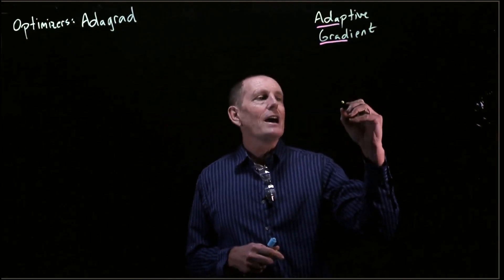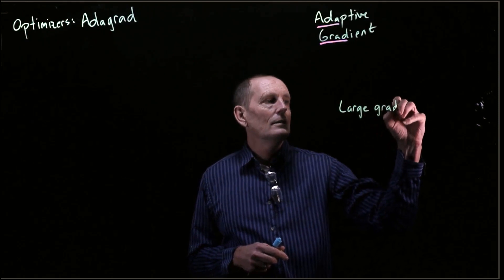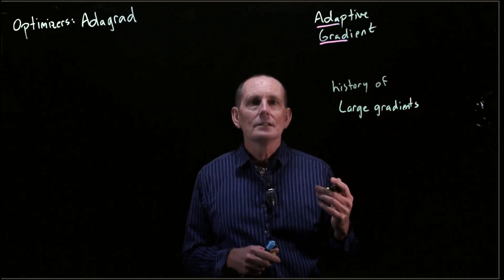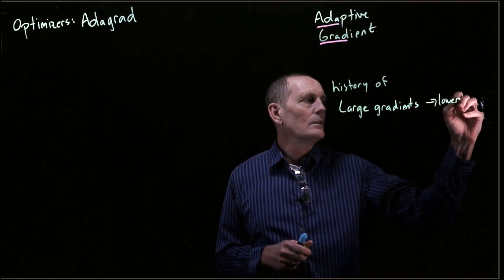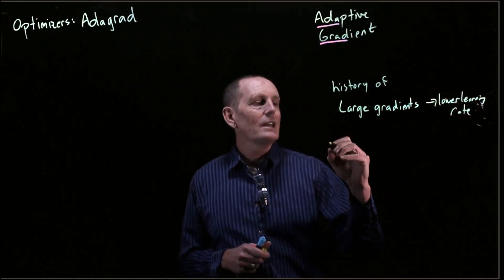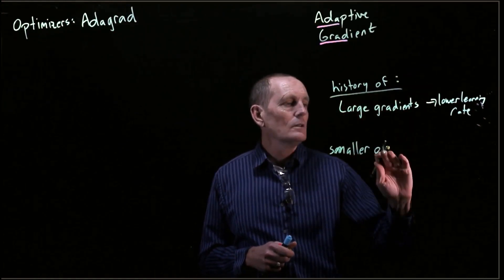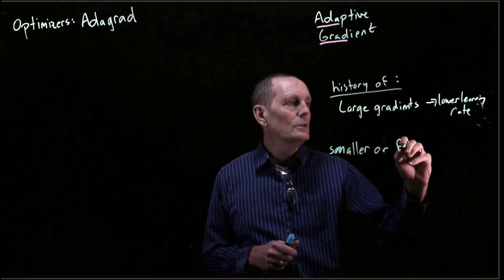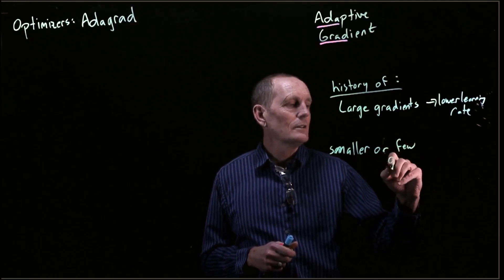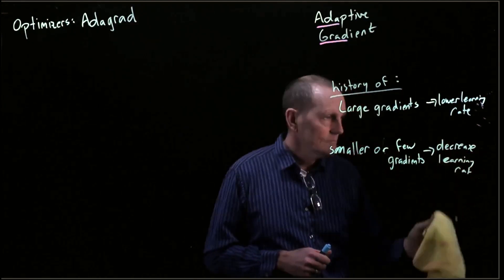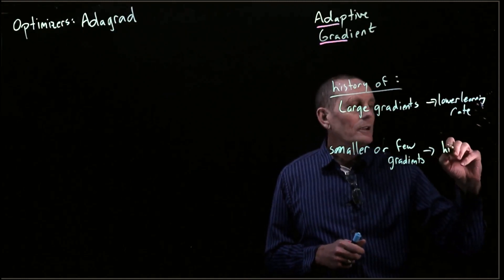The thought is, if we've had a history of large gradients, we want a slower learning rate. And if we've had a history of smaller or few gradients, then we want a higher learning rate.